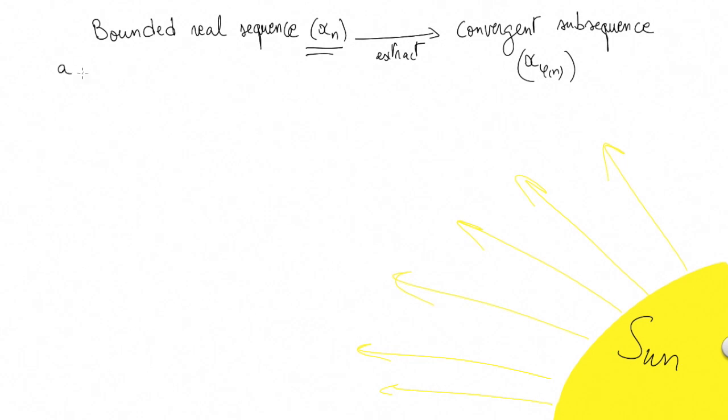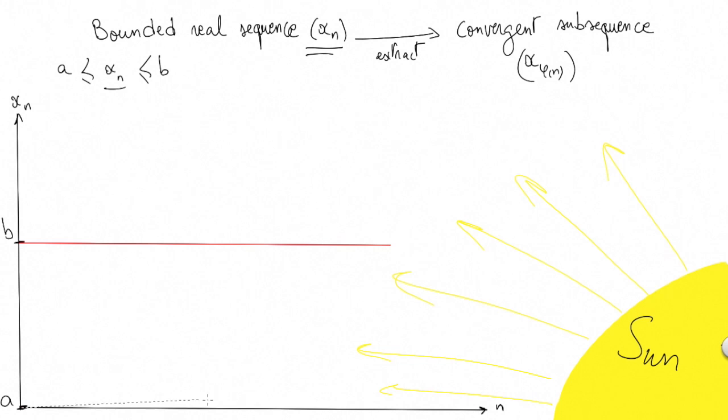As the sequence is bounded, we can say that there exists some reals a and b, such that every term of the sequence is bounded between a and b. I will represent the sequence and put a and b, the bounds of the sequence, such that the terms couldn't go higher than b or lower than a.